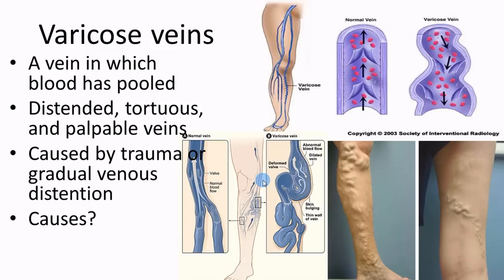Varicose veins are distended and stretched out. When stretched, the valves don't shut efficiently, so blood can flow backwards. Tortuous means they twist and turn — the backflow bends the vein right beneath the skin. They are palpable and can be felt from the surface. Varicose veins sit superficially on the body's surface.